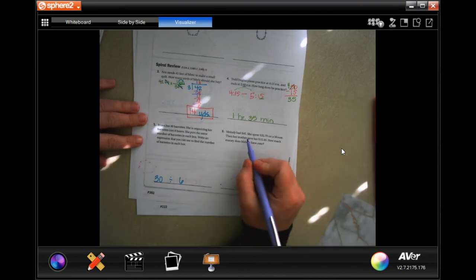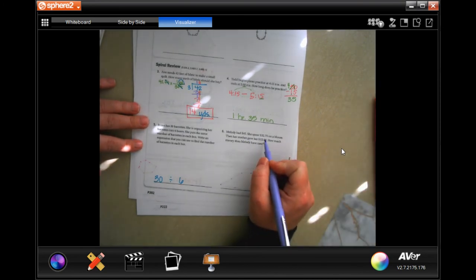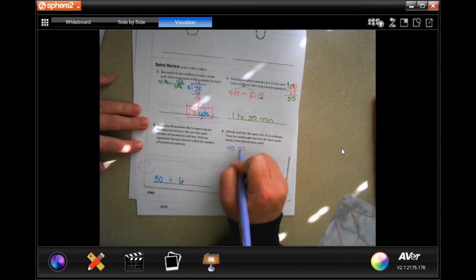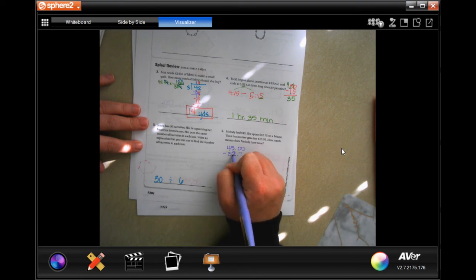Melody has 45 dollars. She spent 32.75 on a blouse, then her mother gave her 15.50. How much money does Melody have now? So 45 dollars minus 32.75.